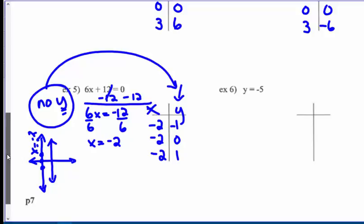So that's the line x equals negative 2. So sometimes there is no y. Solve it for x. Then you don't have a choice for y, or a choice for x. You have to have a choice for y. You can't choose your x value. It always has to be negative 2.